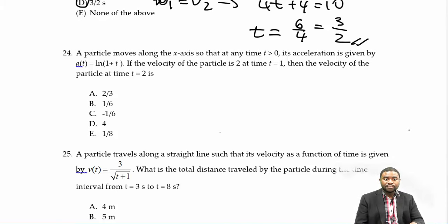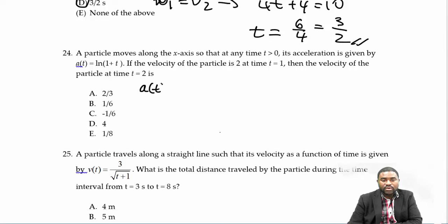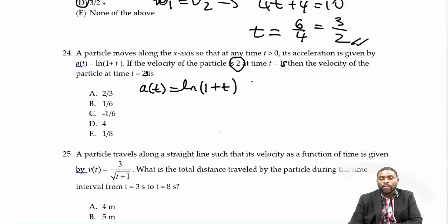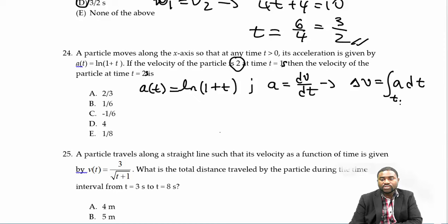This is part two of the review. A particle moves along the x-axis so that at any time t its acceleration is given by a(t) = ln(1 + t). We've been asked to determine the velocity of the particle. We know that a = dv/dt, which means delta v is the integral of a dt from t initial to t final.